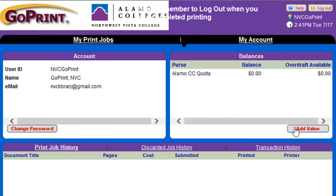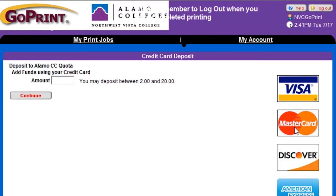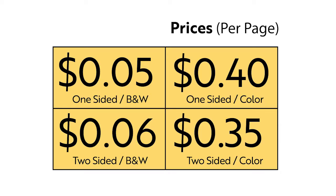You will be asked to deposit anywhere between the $2 minimum and $20 maximum. The cost for black and white printing is $0.05 per page and $0.06 for double-sided pages. The cost for color printing is $0.40 per page and $0.35 for double-sided pages.